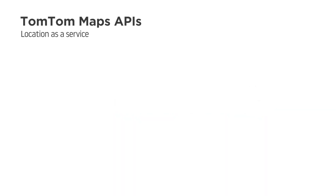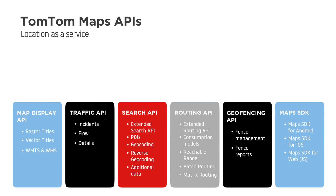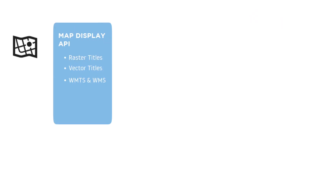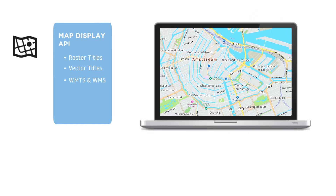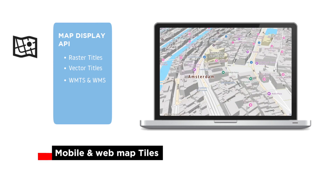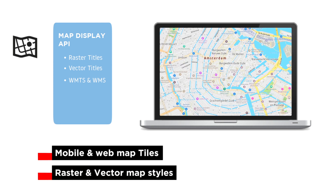TomTom offers developers six different products to make your location-based application. First, we have the Map APIs. These enable static and interactive maps to be displayed in mobile and web applications. Map tiles come in raster or vector format and they can be styled so you can make it your own.